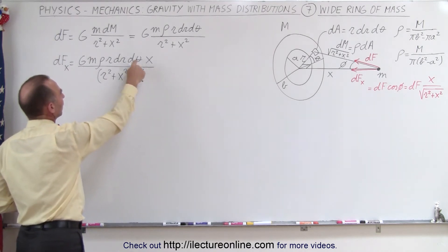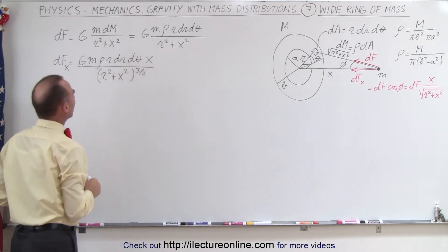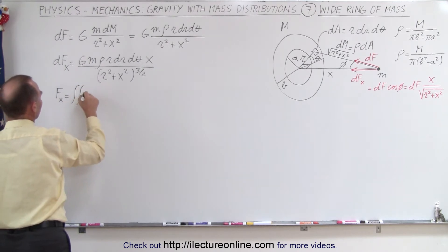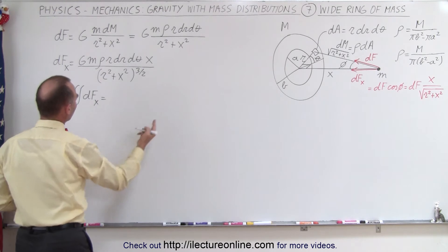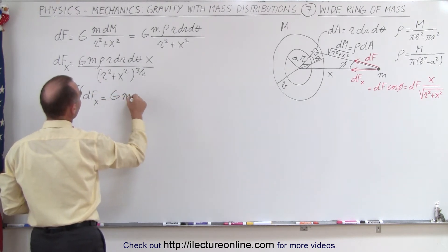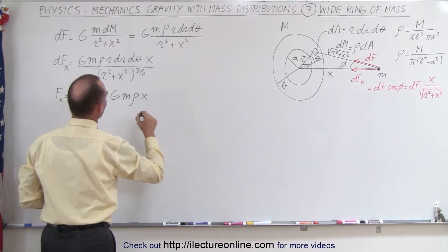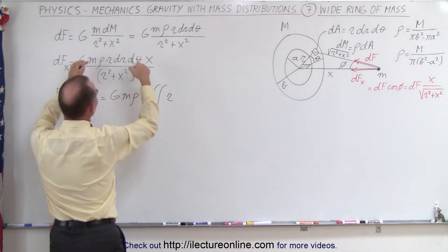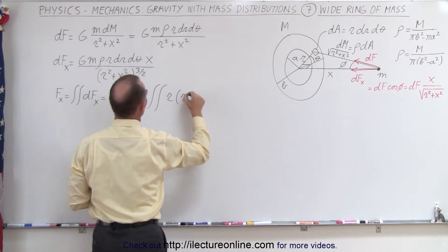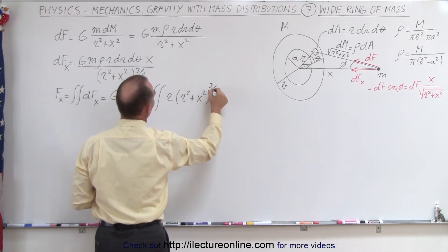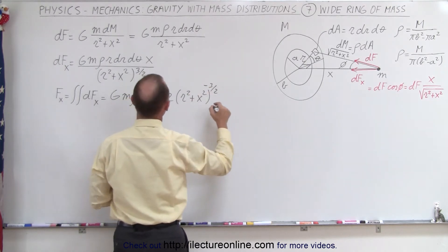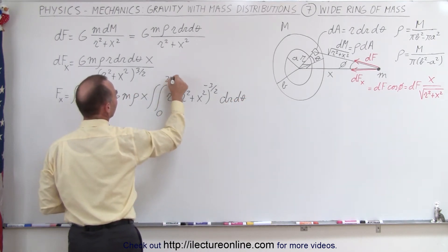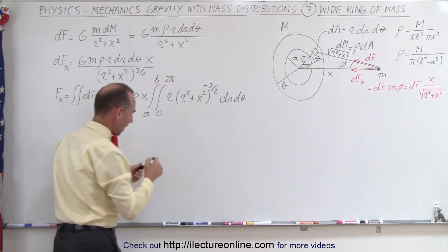We integrate over θ and over r. Pulling all constants outside, Fx equals a double integral of dFx, which gives us G·M·ρ·x times the double integral of r times (r² + x²)^(−3/2) dr dθ, where θ goes from 0 to 2π and r goes from a to b, the inner radius to the outer radius.